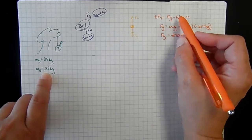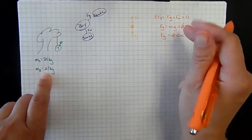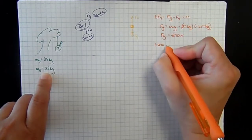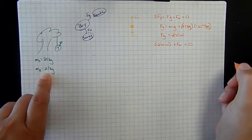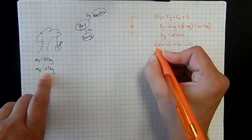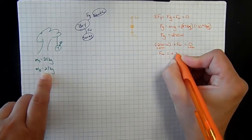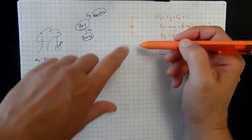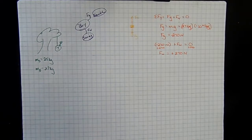So our force of gravity is equal to negative 270 newtons. To find our normal force, we plug this back into our equation: negative 270 newtons plus the normal force equals zero. To solve for the normal force, we add 270 to both sides and find the normal force to be positive 270 newtons. That makes sense — it's balanced, so we have the same force pulling down as going up, so our boy is not moving.